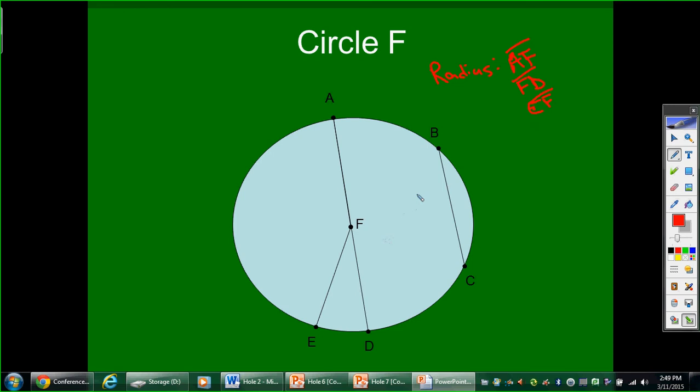A diameter goes from one edge to another edge and passes through the center. In this case, I only have one diameter. That diameter would be segment AD.